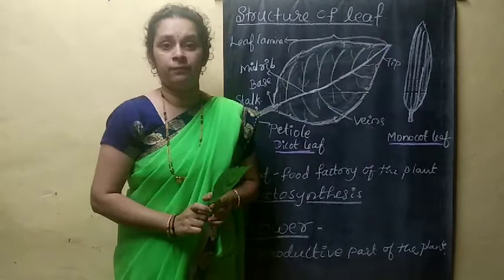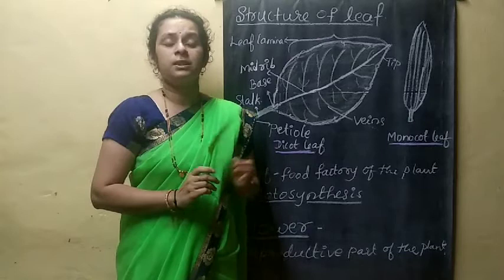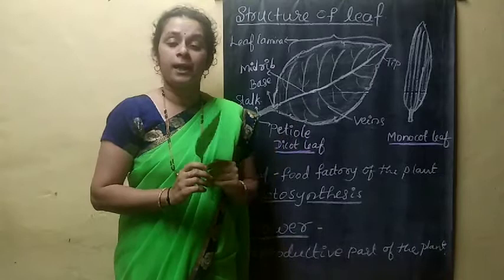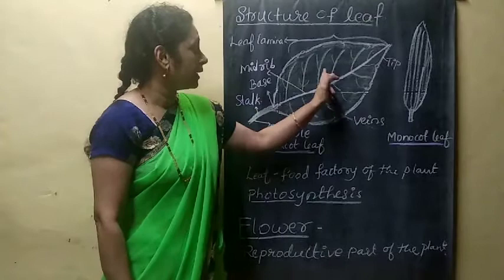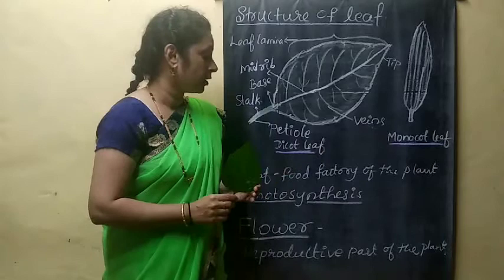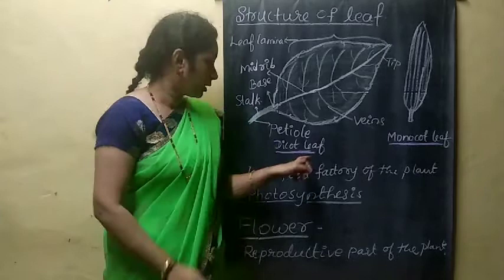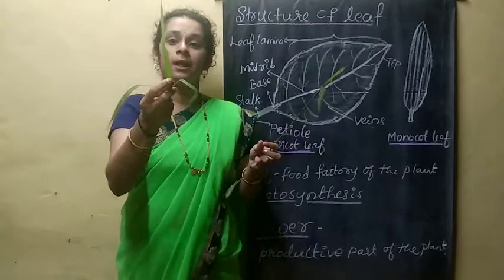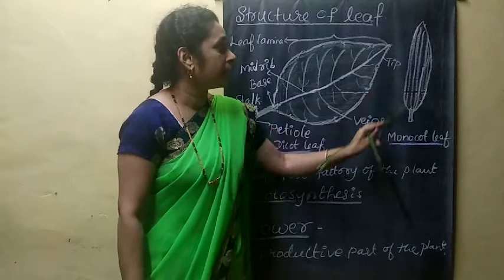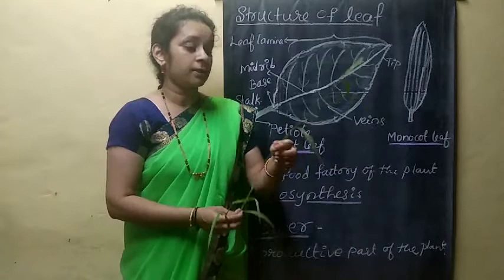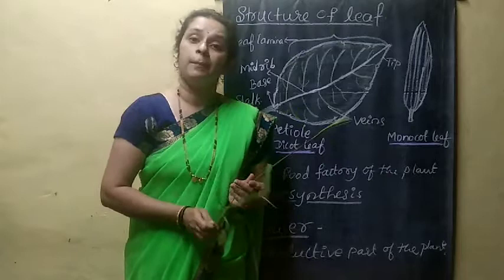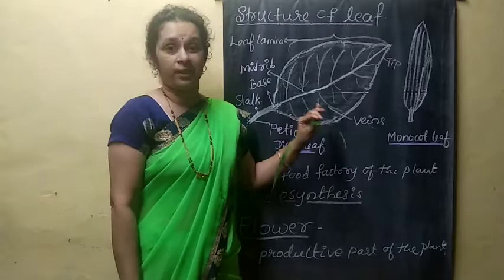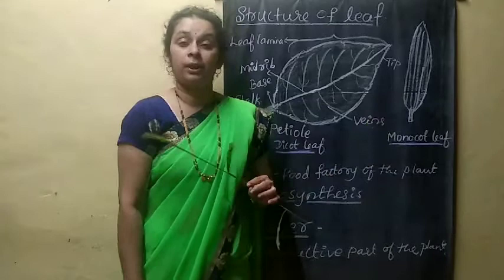These are the main parts of the leaf, but the leaf is different in different types of plants. In dicot plants it is different and in monocot plants it is different. In dicot plants the veins are arranged in the form of a network; hence they are considered reticulate venation. In monocot plants like grass and paddy, you will come across a leaf where the veins are arranged parallelly — one vein parallel to another. That is considered parallel venation.